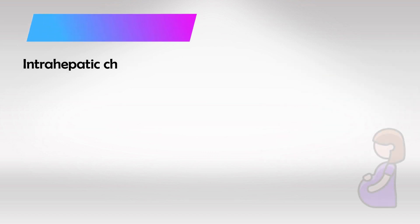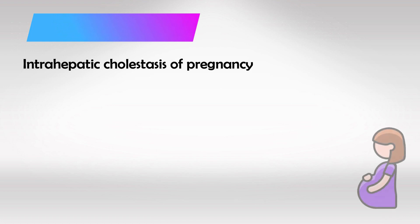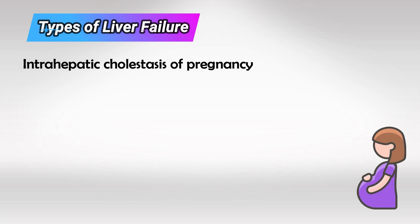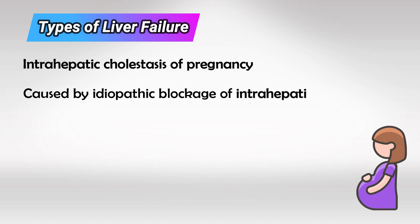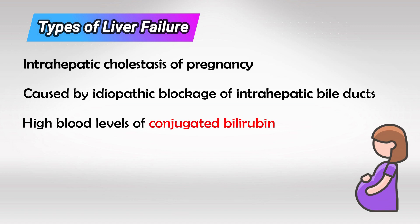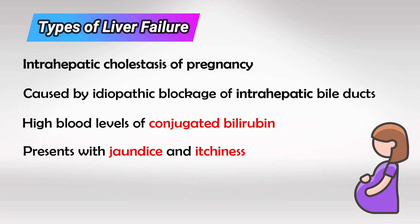In cases of pregnancy we have two conditions associated with liver failure. The first is intrahepatic cholestasis of pregnancy. This is due to idiopathic obstruction of the biliary tree, meaning the biliary tree that normally transports bile from the liver to the intestine gets blocked. The liver will make bilirubin, it will be conjugated but not excreted, resulting in high levels of conjugated bilirubin. This classically presents with itchiness during pregnancy.